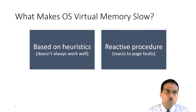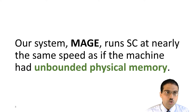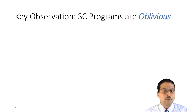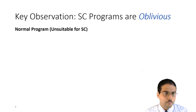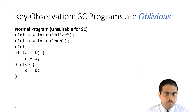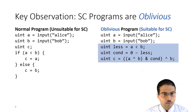To overcome these shortcomings, we take a new approach to memory management for secure computation, which we develop in our system MAGE. MAGE can run secure computation at nearly the same speed as if the machine had unbounded physical memory, in effect providing virtual memory for secure computation at nearly zero cost. Our key observation is that secure computation programs have a property called obliviousness — meaning the sequence of memory accesses issued by your program is independent of its input data. To run a non-oblivious program in secure computation, we have to make it oblivious by replacing branches with multiplexer-like logic, so the memory access pattern is independent of the input values.